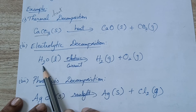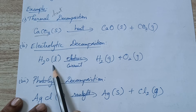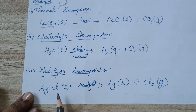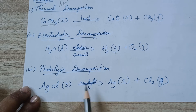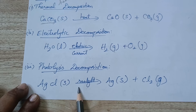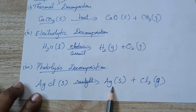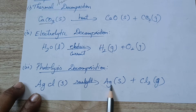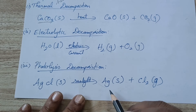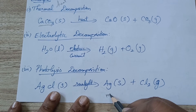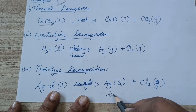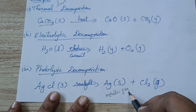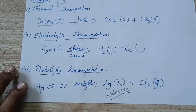Electrolytic decomposition: when electric current is passed through water, it splits into hydrogen gas and oxygen gas. Photolysis decomposition: silver chloride, when exposed to sunlight, splits into silver (metallic gray in color) plus chlorine gas.